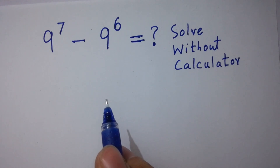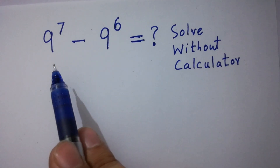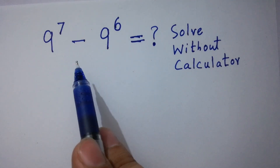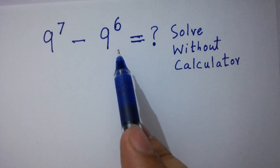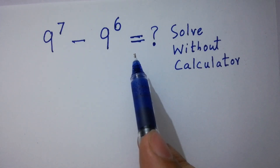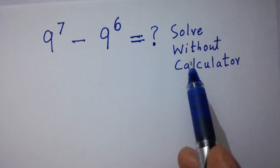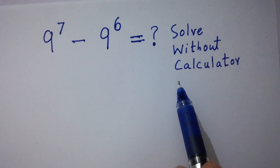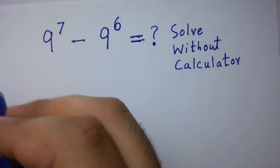Hello friends. 9 to the power 7 minus 9 to the power 6 equals what? Solve without calculator. Let's have a solution.